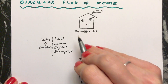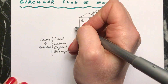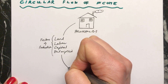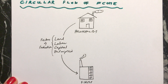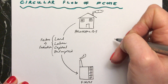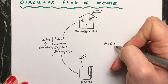We imagine the households own all four factors of production, and they supply the factors of production to the firms, so that the firms can use these factors of production to make things. So when the land, labour, capital, and enterprise have come to the firms, they use these factors of production to make goods and services.